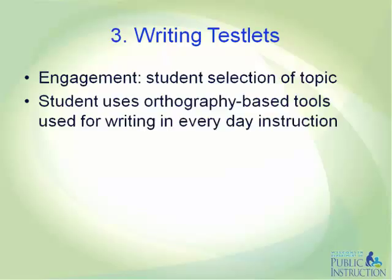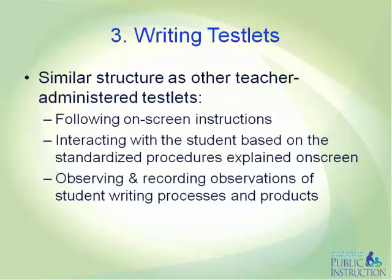In emergent writing testlets, the student often chooses from an array of options selected from topics to which they had prior exposure during instruction. Students taking conventional writing testlets also write about familiar topics. In both types of writing testlets, the student uses orthography-based tools for writing and everyday instruction — such as those described before: pen, pencil, keyboard, etc. These tools must offer students access to all 26 letters of the alphabet.